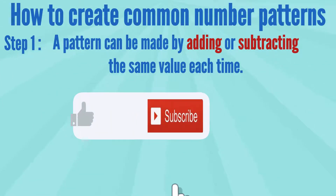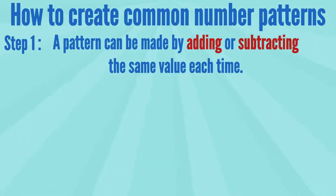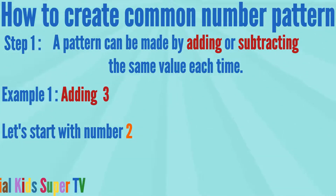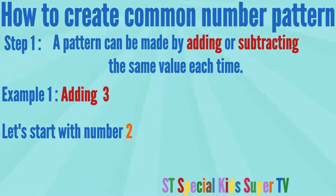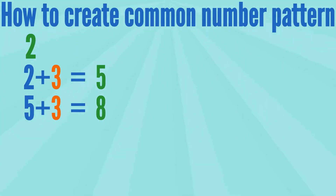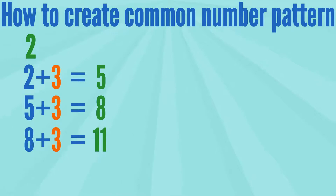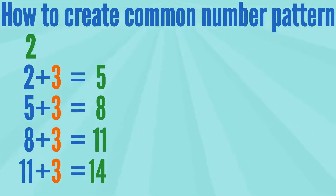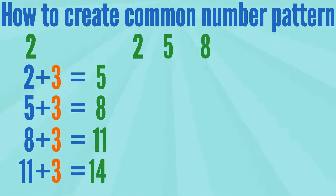Now we are going to learn how to create common number patterns. Step 1: A pattern can be made by adding or subtracting the same value each time. Example 1 — Adding 3: Let's start with the number 2. 2 plus 3 equals 5, 5 plus 3 equals 8, 8 plus 3 equals 11, and 11 plus 3 equals 14.